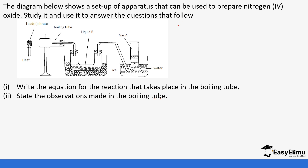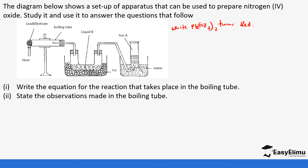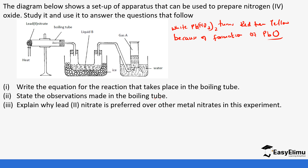The next question: observations made in the boiling tube. The white lead 2 nitrate turns red then yellow due to the formation of lead oxide. The next question asks why lead 2 nitrate is preferred over other metal nitrates — it is preferred because it does not have water of crystallization.